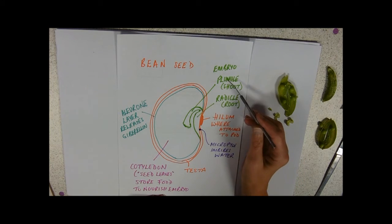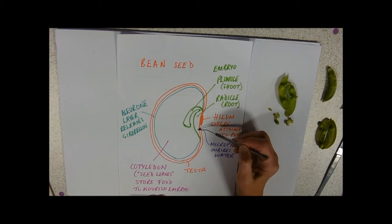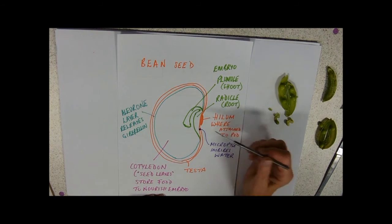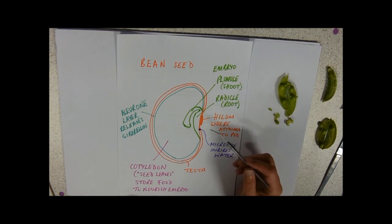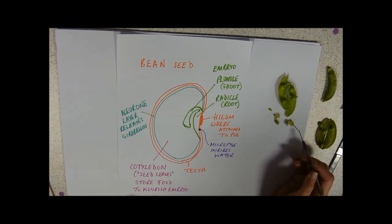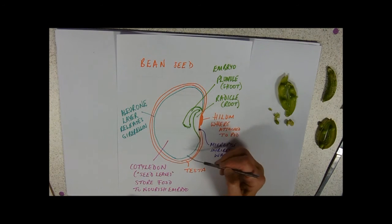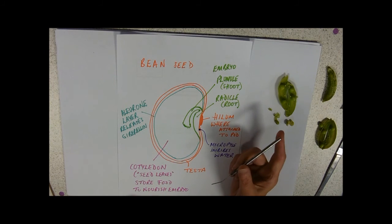I've done my embryo here. Plumule is going to be the shoot. Radical is going to be first out, out of the testa and forming the root. And then the endosperm effectively absorbed into these two cotyledons, these seed leaves, which are storing the food. They're derived from the endosperm tissue.